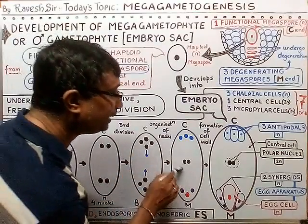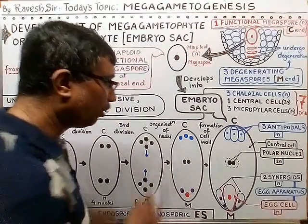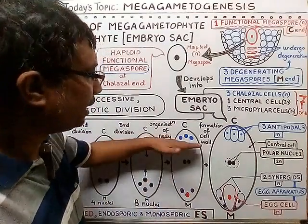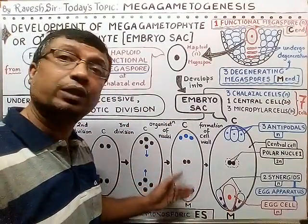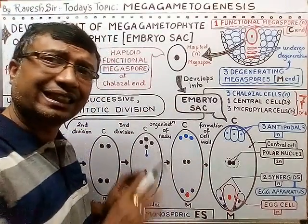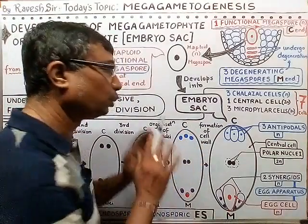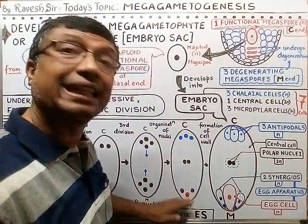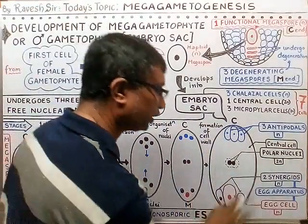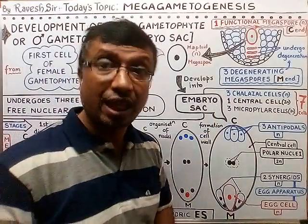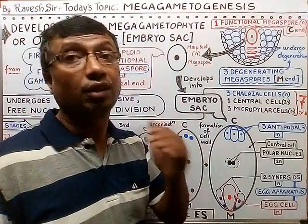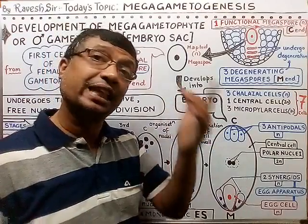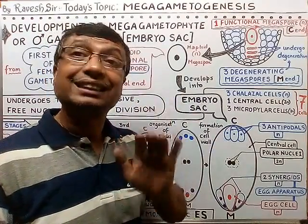Both migrating nuclei meet near the center of the embryo sac. The eight nuclei are now organized into three zones or three layers: three nuclei at one end, three nuclei at the other end, and two nuclei in the central position. Once the nuclei reach their final positions, cell wall formation occurs at the chalazal end and the micropylar end. The overall structure formed is the embryo sac, whose detailed structure has been discussed in a previous video.